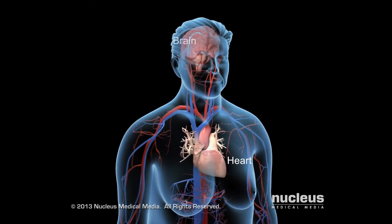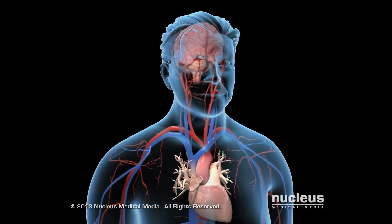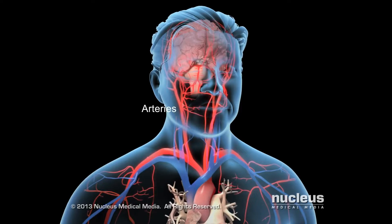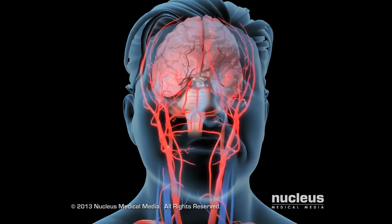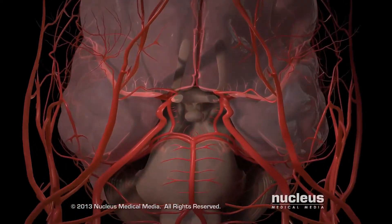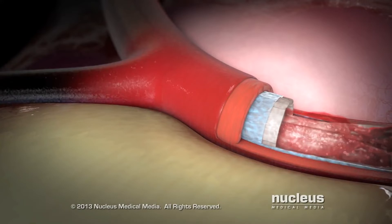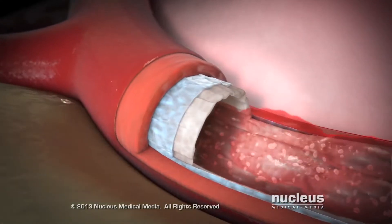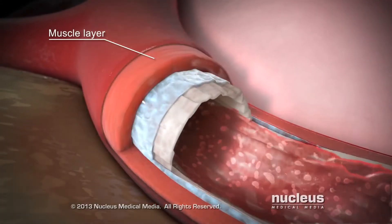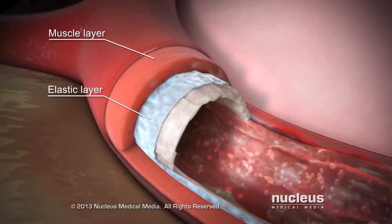Your heart pumps blood to your brain through blood vessels in your neck. These blood vessels, called arteries, branch into even smaller arteries that bring blood to your brain cells. Some of these small arteries join each other to form a loop known as the Circle of Willis. The walls of the arteries contain special muscle and elastic layers that help them adapt to the blood pulsing through them.